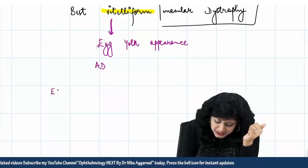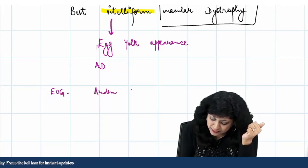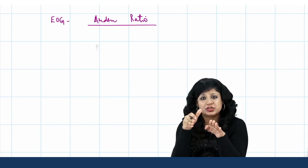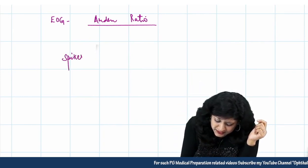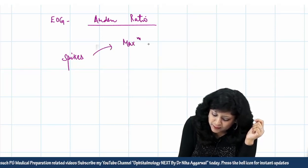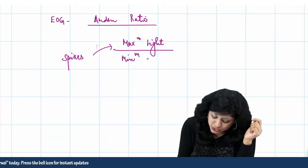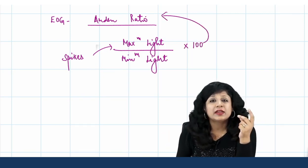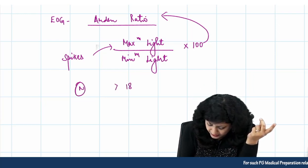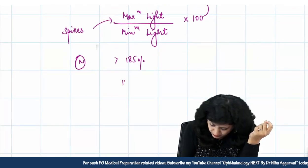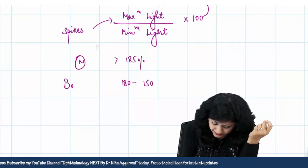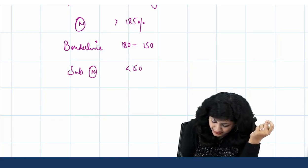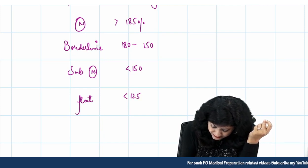Another important thing in EOG is the Arden ratio. We take the Arden ratio in EOG. The potential comes in the form of spikes — you take the ratio of one reading under maximum light condition divided by one under minimum light condition, multiplied by 100, and you get the Arden ratio. Normal is more than 185%. Between 150 to 180 is borderline. Less than 150 is subnormal, and less than 125 is flat.